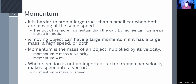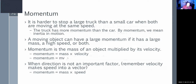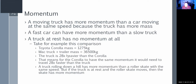Momentum is the mass of an object multiplied by its velocity: momentum equals mv. When direction isn't important, we can also say mass times speed equals momentum. A moving truck has more momentum than a car at the same speed. A fast car can have more momentum than a slow truck. A truck at rest has no momentum at all.